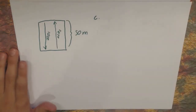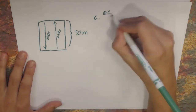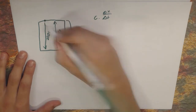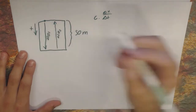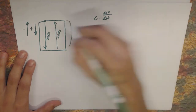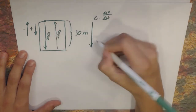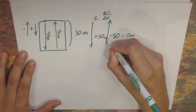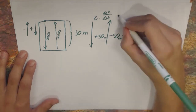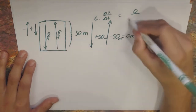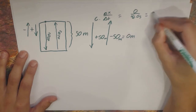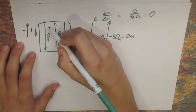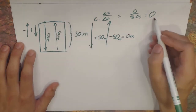Part C is a little tricky — it asks for the average velocity for the round trip. Average velocity is change in X over change in time. You'd be inclined to think the change in X is 50 plus 50 meters, but if we define the positive direction going down and the negative direction coming back, going 50 meters in the positive direction and then 50 meters back in the negative direction makes the total displacement zero. So the average velocity for the round trip is zero — the denominator would be 42.0 seconds, but it doesn't matter. The reason is that from the starting point to the finish point, your position hasn't changed.